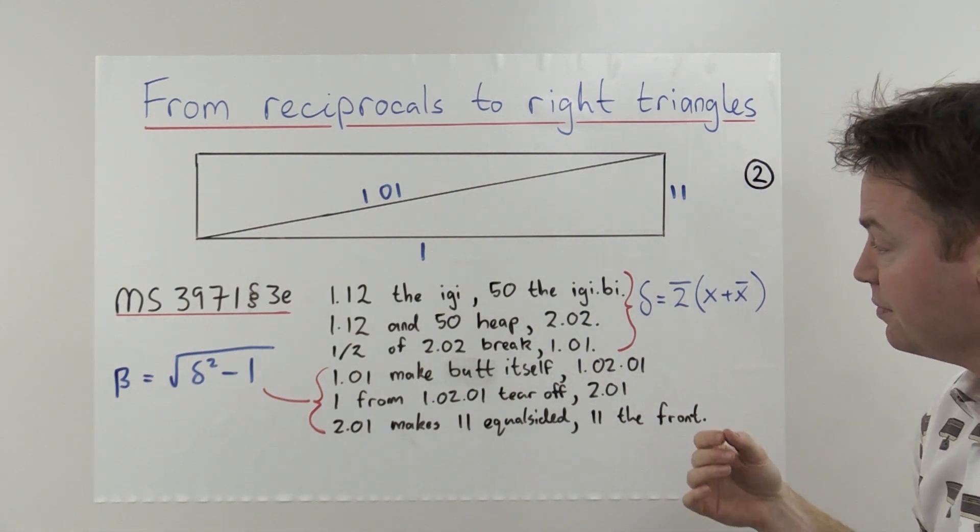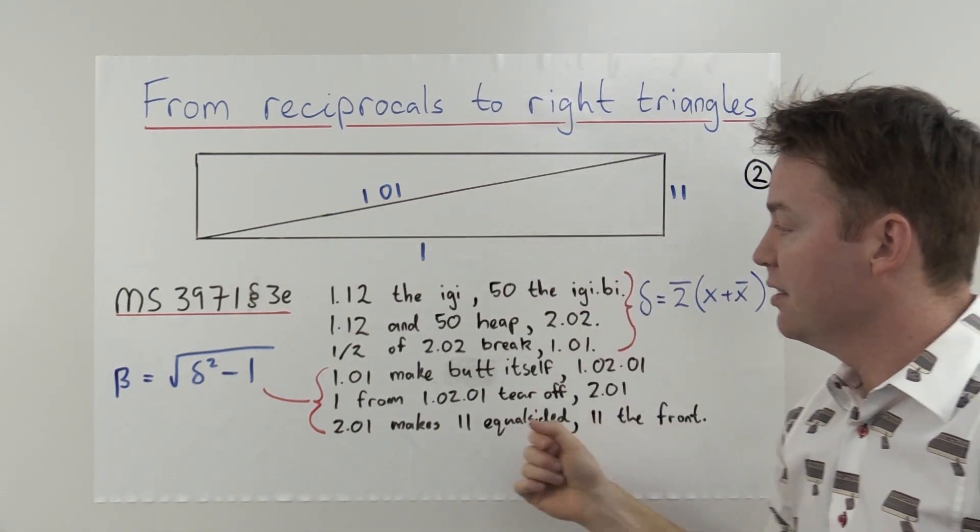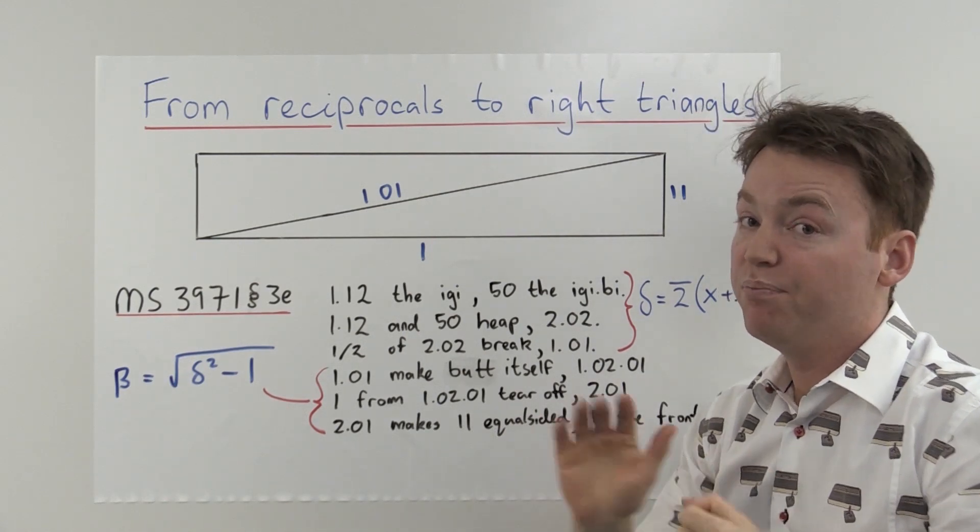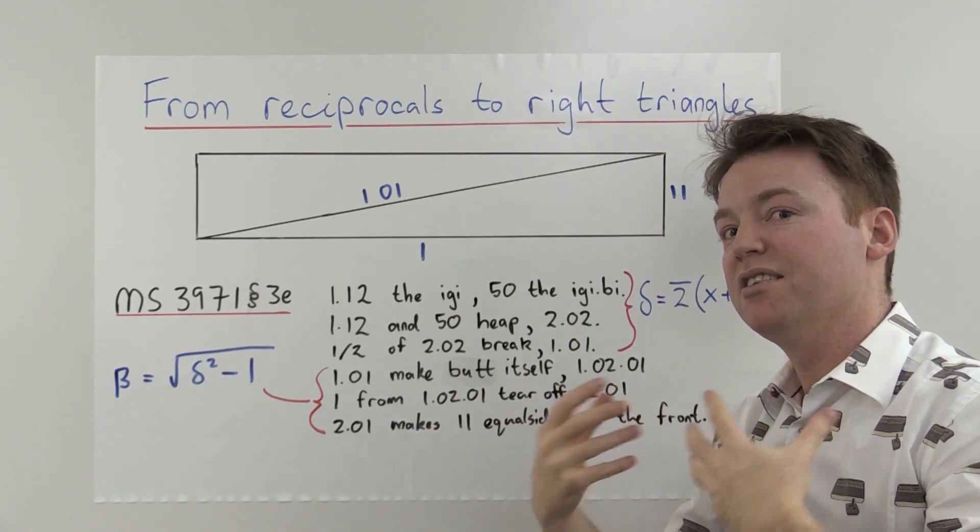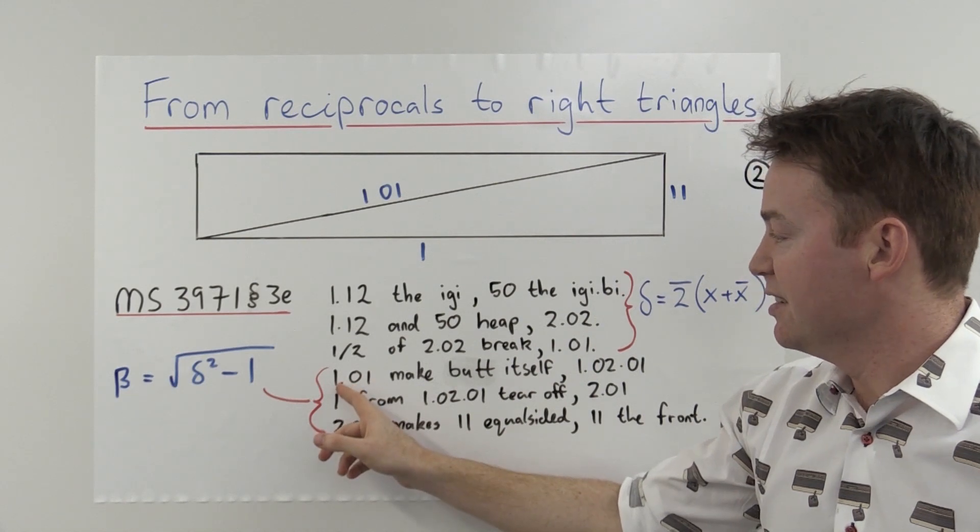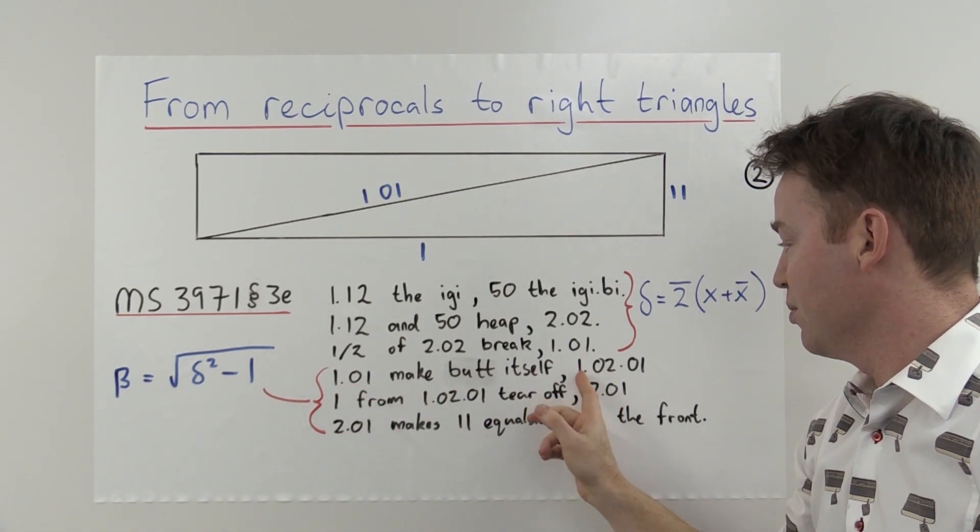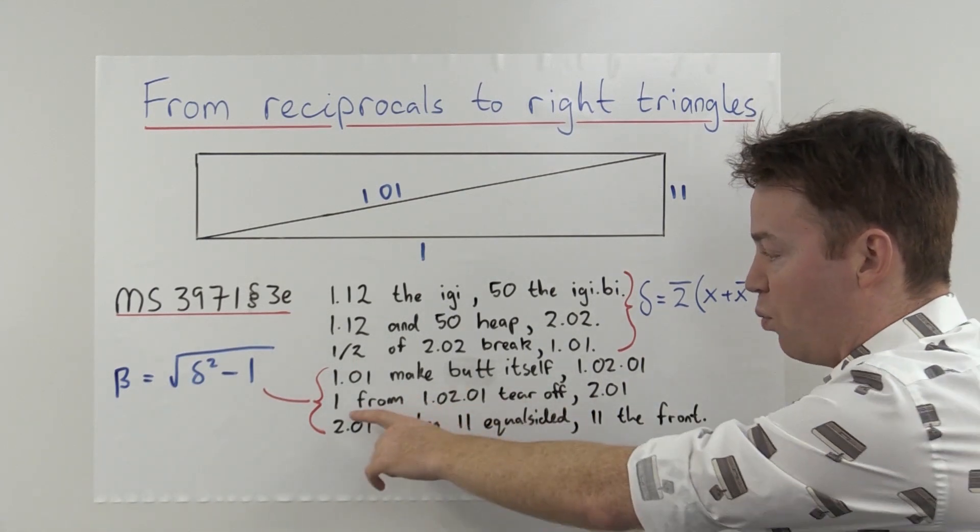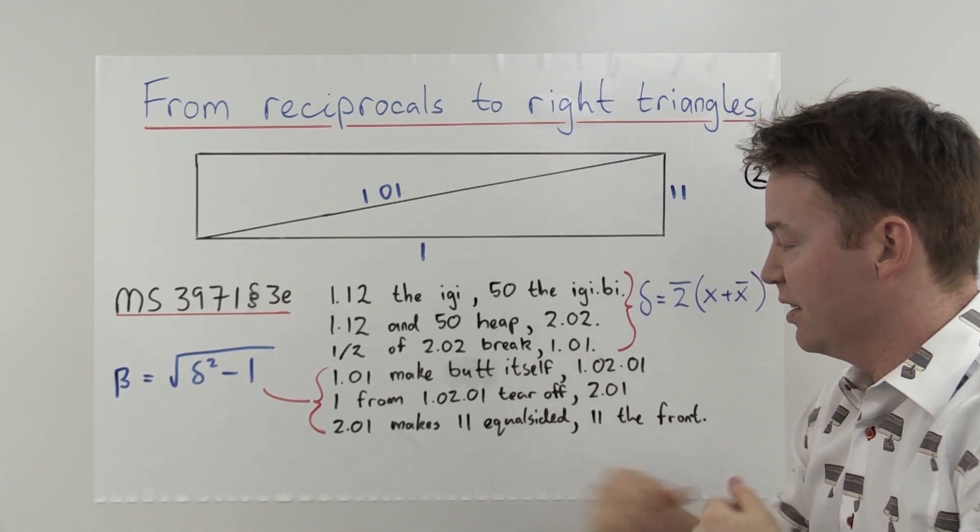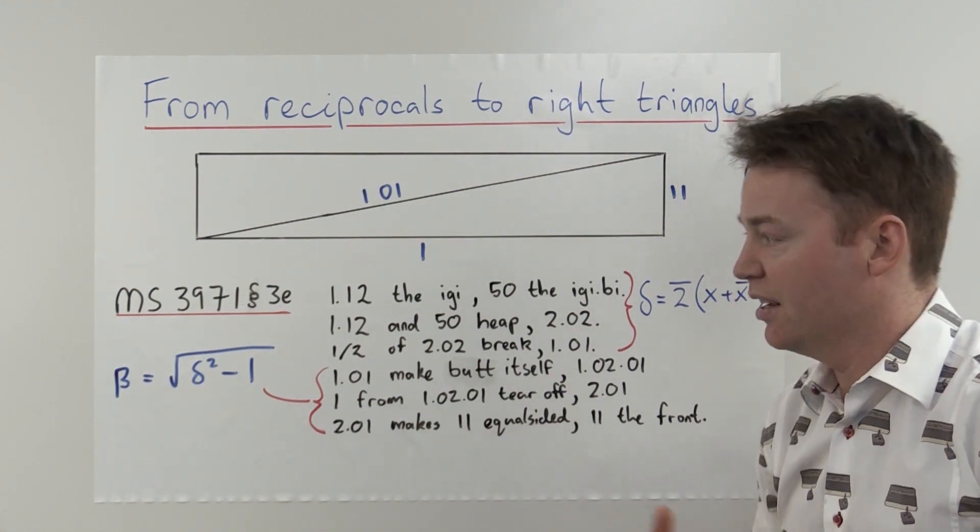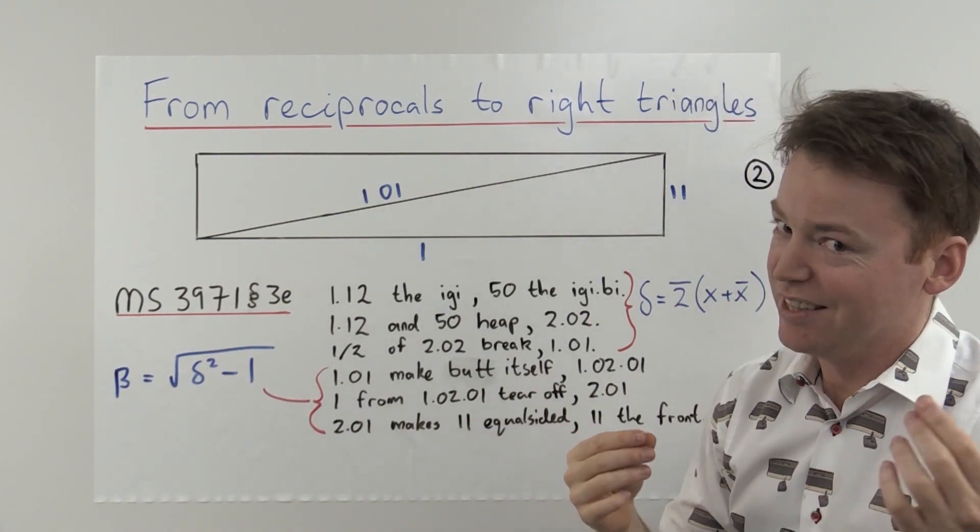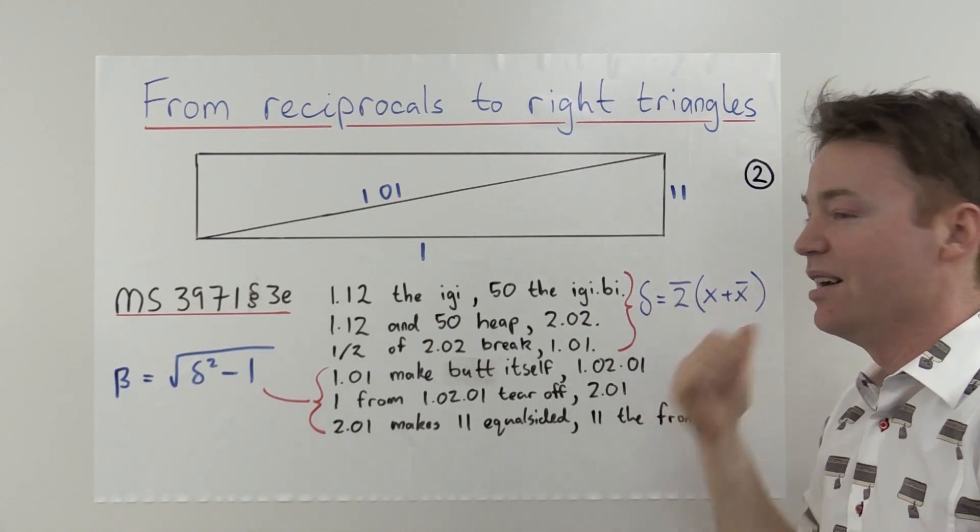Then you take half of this and that's 1:01. And really this corresponds to the process of generating the delta from our previous slide. This is half x plus x bar if we treat x just as a single number, a regular number. So once you've got the delta, which is the diagonal here, then you can obtain the beta. You could obtain the beta by taking x minus x bar and then halving that, but in this example, the purpose is to exhibit the diagonal rule. So instead of computing beta the easy way, the scribe does the following: takes the delta and squares it, and the square of delta is 1:02:01. And then that 1 is torn off to just get the 2:01, which is a perfect square. In fact, 2:01 is 11 squared. And so the scribe obtains the short side here using this formula, not the easy way which would have just been to take x minus x bar and divide that by 2.